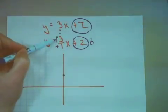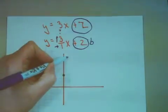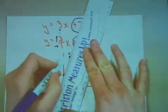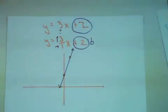From that point, I need to rise 3 and run 1. 1, 2, 3, 1, there's my big fat dot. I need to use my straight edge and make a beautiful line for my equation, y equals 3x plus 2.